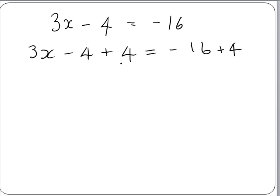So the minus 4 and the plus 4 will give us 0. So we are left with 3x plus 0 equals minus 16 plus 4 is minus 12. So we are left with 3x equals minus 12.